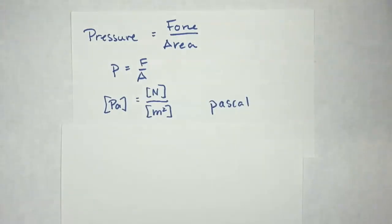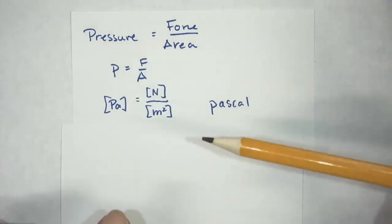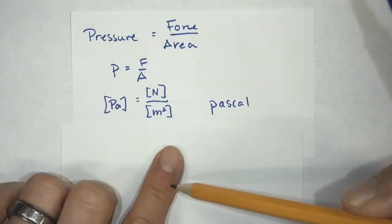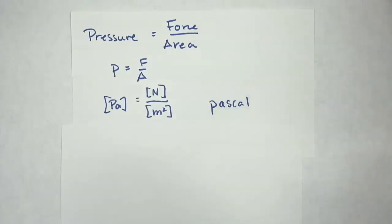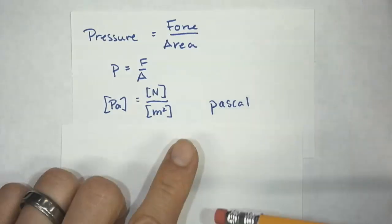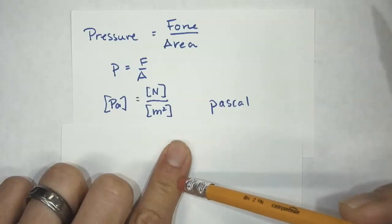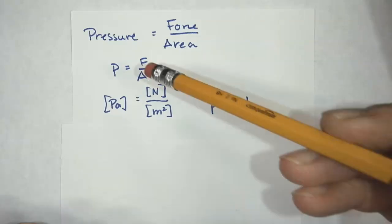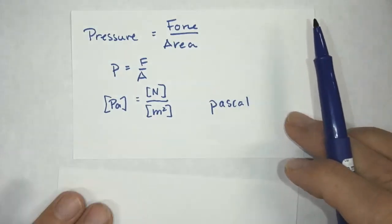Here's another example. I've got a pencil right here, and this tip has a very small area, so I can really feel that. That feels like more pressure than if I use the back side on the eraser side — bigger area, less pressure. So there's an inverse relationship between the pressure and the area.